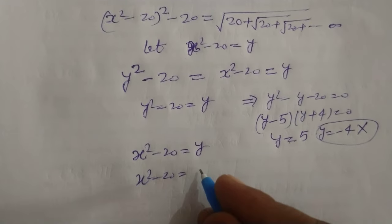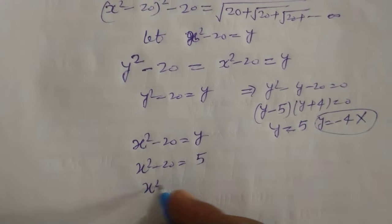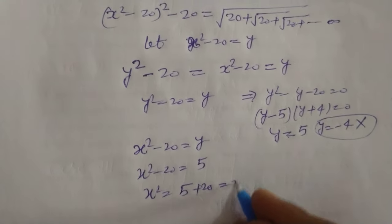X square minus 20 equal to 5. X square equal to 5 plus 20. This is 25.